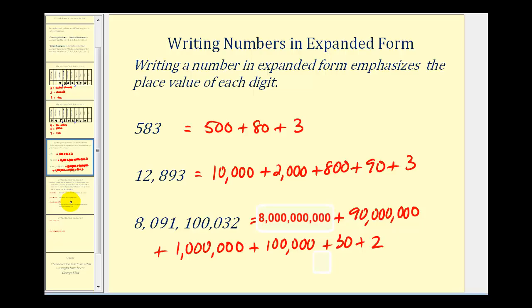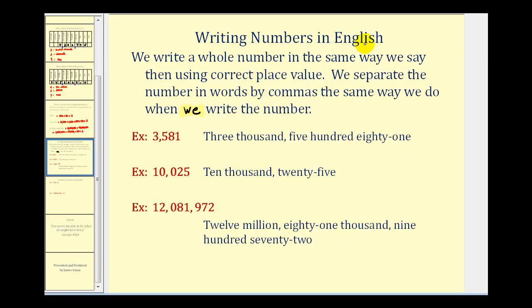The last thing we'll do is take a look at how we write whole numbers in English. We write a whole number in the same way that we say them using correct place value, and we separate the number in words by commas the same way we do when we write the number. For example: three-thousand, five-hundred eighty-one. Here we have ten-thousand, twenty-five — notice the comma between ten-thousand and twenty-five. And then twelve-million, eighty-one-thousand, nine-hundred-seventy-two.